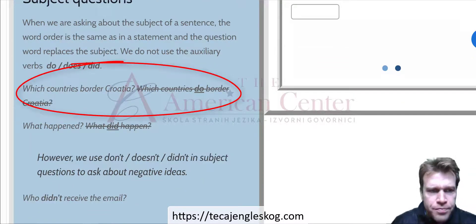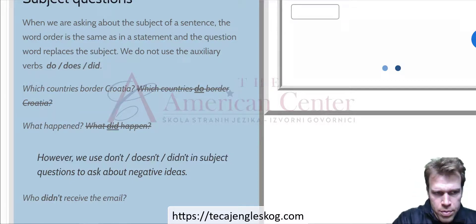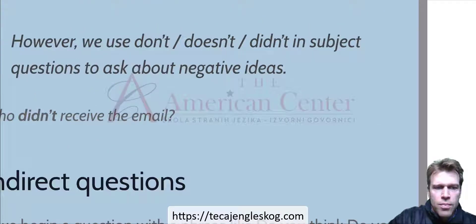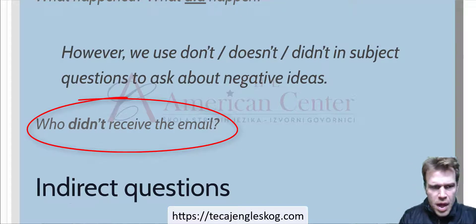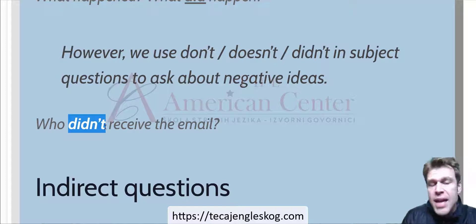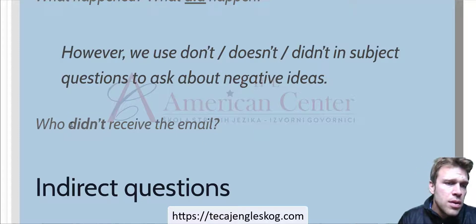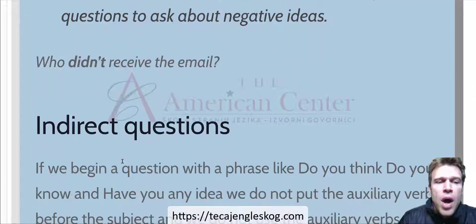We can see some examples of subject questions: 'Which countries border Croatia?' Here you can see there is no helping verb, just as in 'What happened?' Now there is an exception, like everything: 'Who didn't receive the email?' This is negated — in negative subject questions, we do use the auxiliary verb.